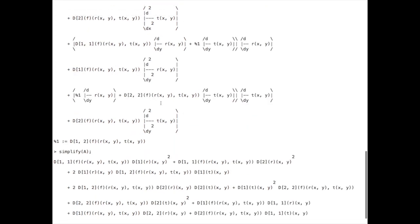When Maple prints this result, it uses two different notations — one with d/dx which takes a lot of space, or the capital D notation. I'll apply the simplify function to A. If I simplify this expression, look what it does — it changes the printing to an inline notation with capital D. For instance, D12f means you differentiate with respect to the first variable and then take the second derivative with respect to the second variable, so it's the derivative with respect to r and then t, since r is the first variable and t is the second.